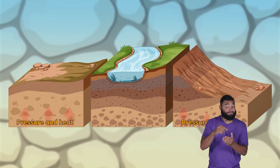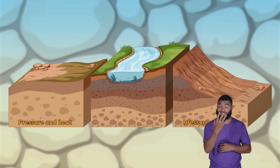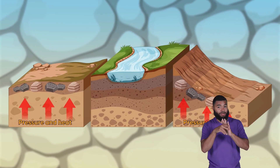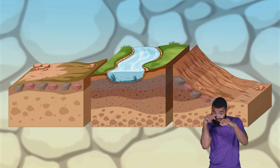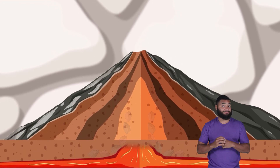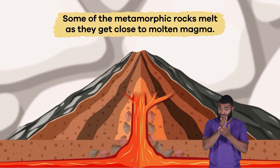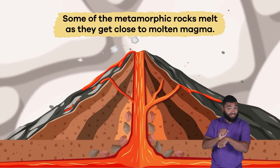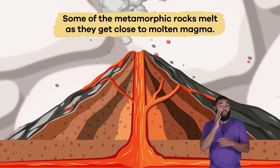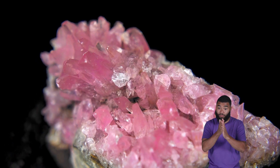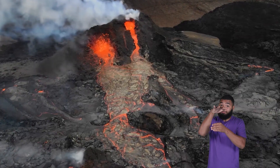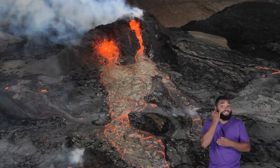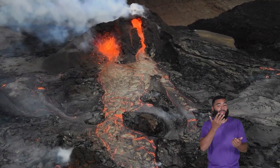Step 5: After a long time period of pressure and heat, the igneous and sedimentary rocks buried in the Earth's crust change into metamorphic rocks. Step 6: Some of the metamorphic rocks melt as they get close to molten magma. Step 7: Some are uplifted to the Earth's surface, and if they melt, they get released again through volcanic activity.